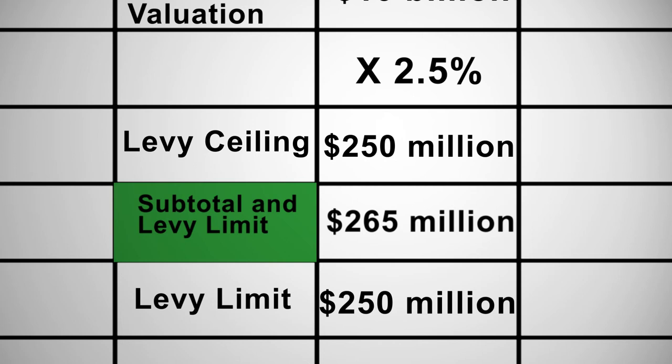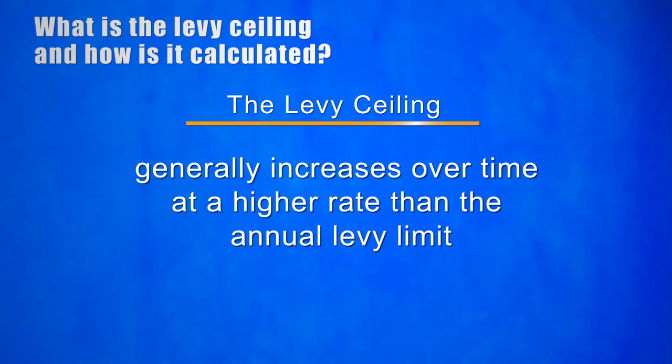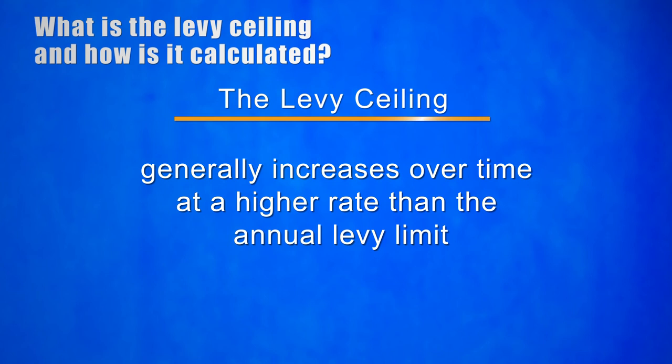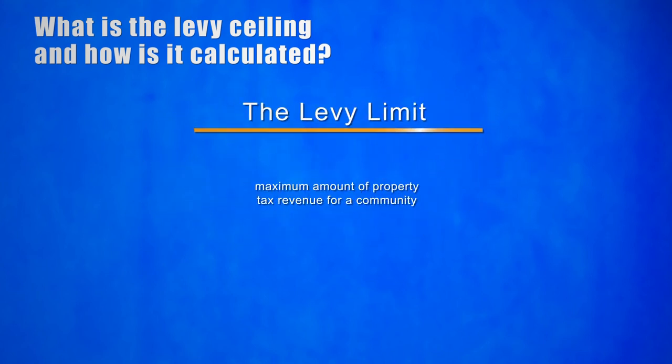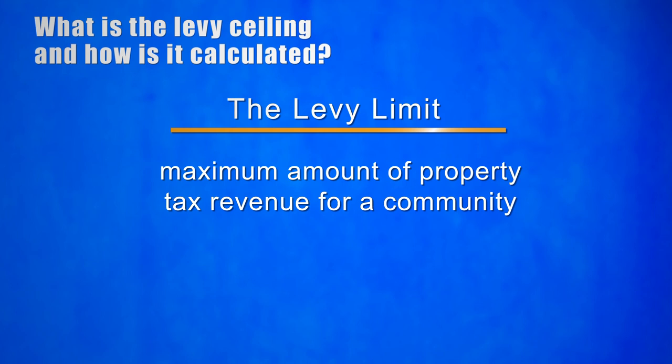The reason is that the total assessed valuation of a community's tax base, and therefore the levy ceiling, generally increases over time at a higher rate than the annual levy limit. And therefore, the ceiling increases at more than a sufficient rate to accommodate the two annual increases in the limit. As we have seen, the levy limit establishes the maximum amount of property tax revenues a community will ordinarily have for budgeting purposes each year.